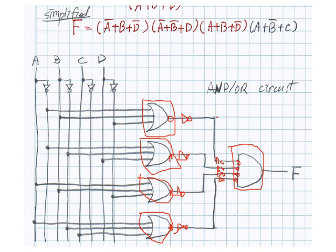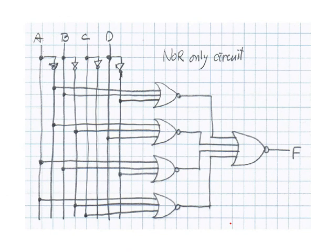Now we take care of the added inverters. If we find an even number of inverters on the same line, we cancel them out. Fortunately, every line has two inverters, so all of them cancel out. We can finalize the circuit, having successfully converted all OR and AND gates to NOR gates only. This is how we do technology mapping.